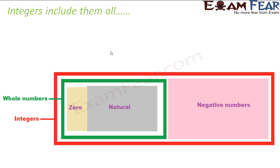So integers include them all. The natural numbers are included within integers. When you add zero with the natural numbers, what do you get? All that is enclosed within the green shield — that is whole numbers. Now when you include the whole numbers plus the negative numbers, then you get all that is included within the red shield — that is the integers. So integers include whole numbers, natural numbers, and negative numbers; all of them together make the integers.